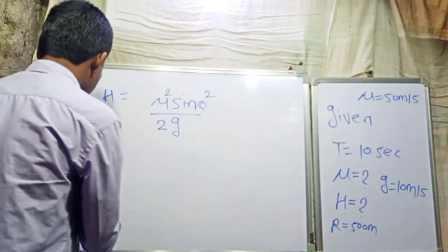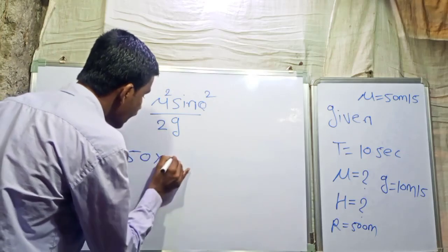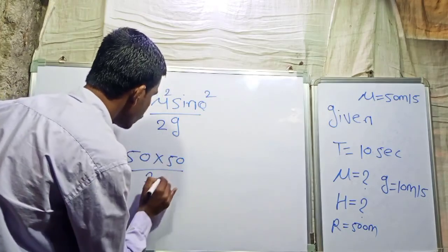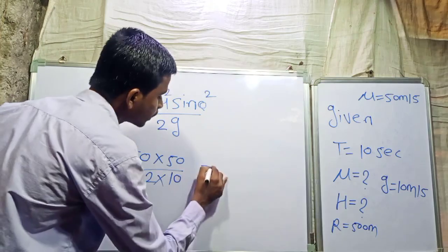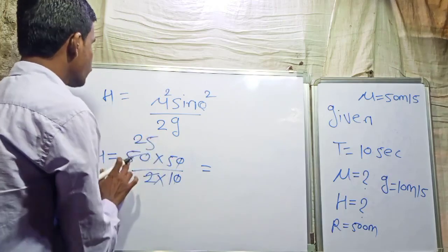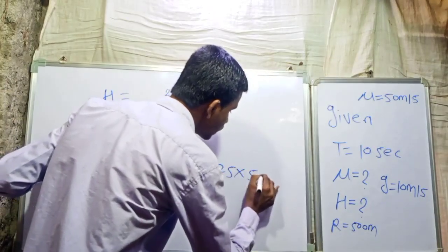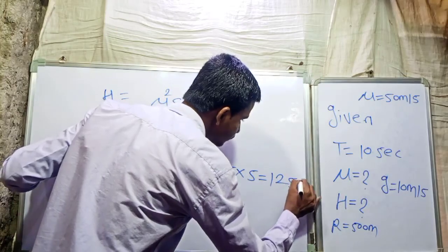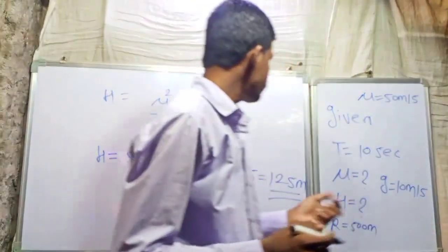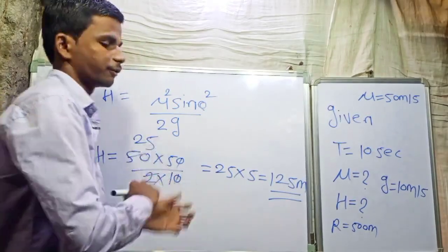u is 15 meters per second, so H = 15 × 15 / (2 × 10) = 225 / 20. Calculating: 25 × 5 = 125. The maximum height is 125 meters. Yes, the height is 125 meters.